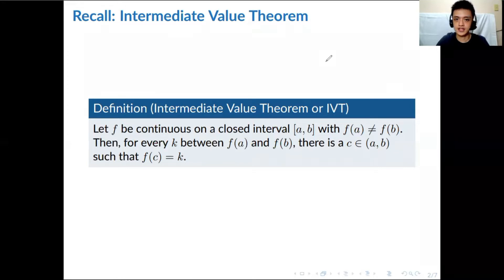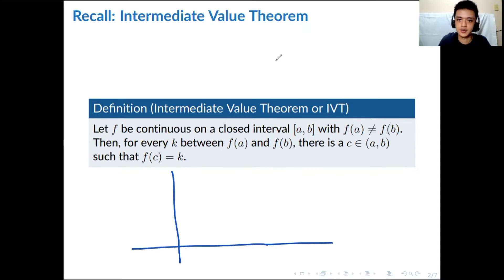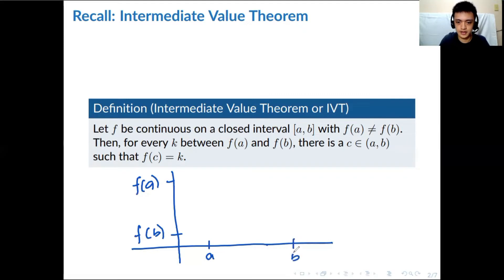At first it's not that easy to understand, so let's try to draw a picture to get the intuition behind IVT — why there is such a theorem and how we can be sure it's true. So suppose we have f(a) here and f(b) there, with a and b right here. Let's try to draw a function like this.